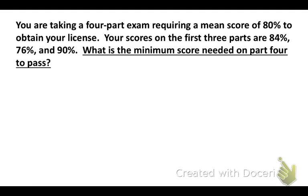Now, last of all, you know, exams are becoming very common for, not just for you as students, but in many occupations you have to take a test. And so you're taking a four-part exam requiring a mean score of 80% to obtain your license. Your scores in the first three parts are 84, 76, and 90. And you'd like to figure out the minimum score you need on part four to pass to get your license.